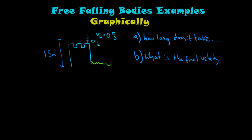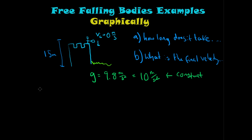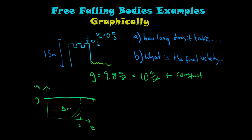We know that gravity equals 9.8 meters per second squared, but we'll call it 10 meters per second squared to make the numbers easier to work with. This is a constant acceleration. On the acceleration-vs-time graph, g is constant, so it goes out as a flat line. The area underneath this interval equals the change in velocity.